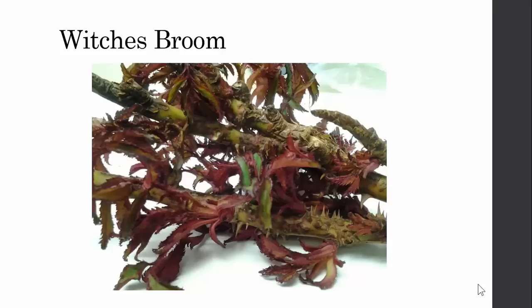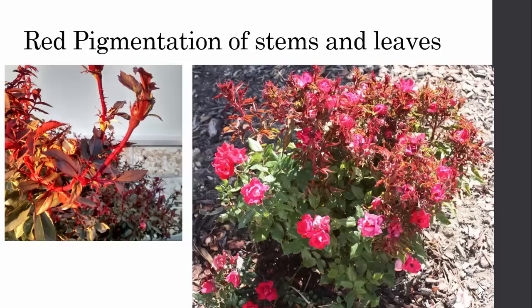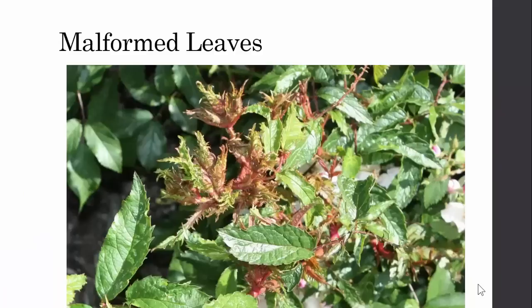Witch's broom is another major indicator of rose rosette infection. This is an extreme example of multiple branching from one location — basically it looks like a broom. Red pigmentation of stems and leaves is also a symptom. In this situation, both roses were infected and showing symptomatic stems, but were then pruned heavily to cover up those symptoms. The landscaper didn't know what the disease was and thought pruning it off would cure the plant, but actually it does not.